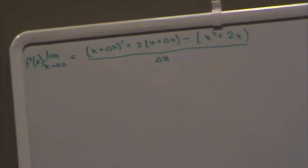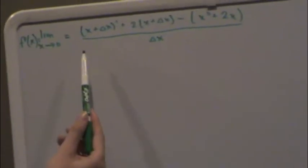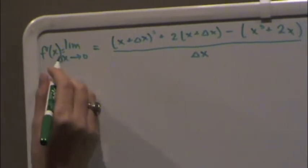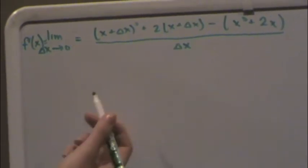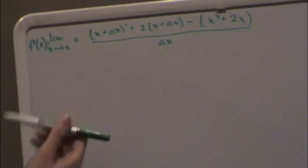Now that we have our derivative by the definition of a limit, we can solve this. This is the change in x as it's approaching 0. And at the end, we're going to plug in 0 for the change in x to get the derivative.